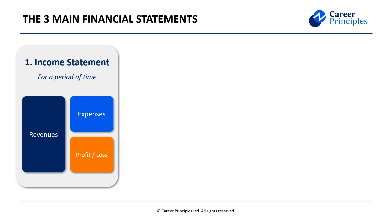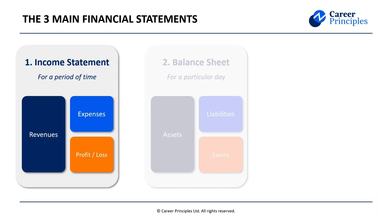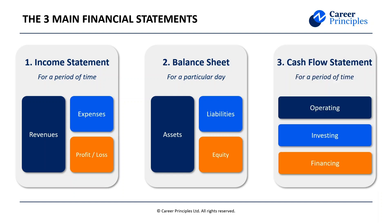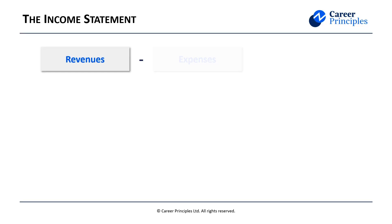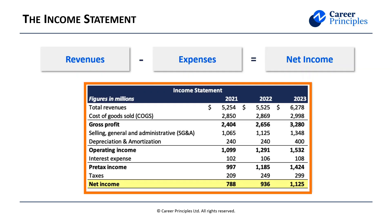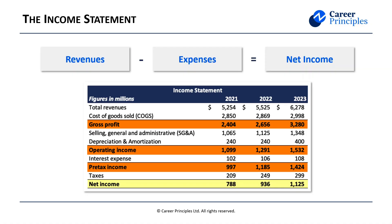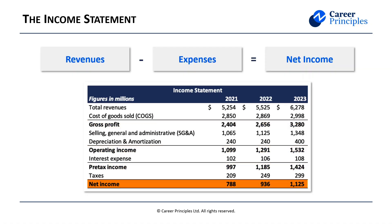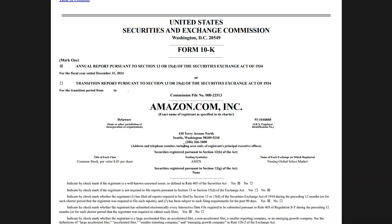First, let's quickly define the income statement. It's one of the three main financial statements alongside the balance sheet and the cash flow statement. It tells us for a specific period of time, like a year or a quarter, what were the company's revenues minus all of its expenses to reach its profit or net income. Here's a sample income statement with several subtotals before it reaches the net income at the very bottom.